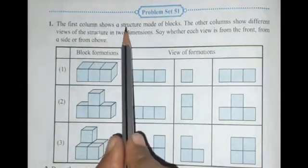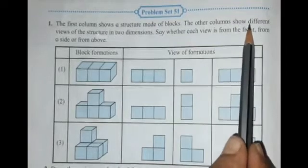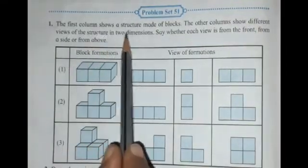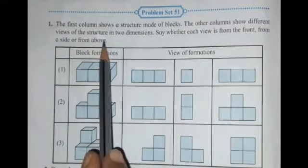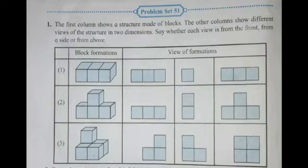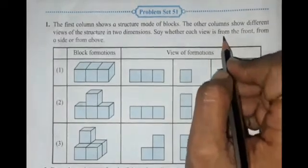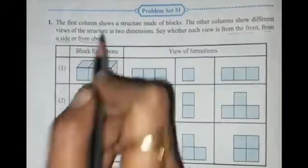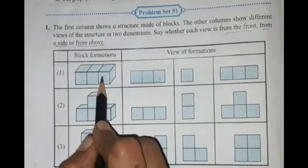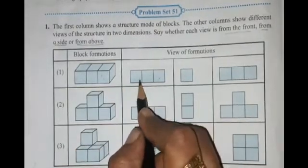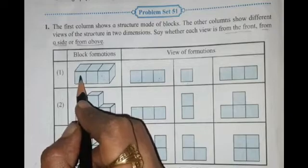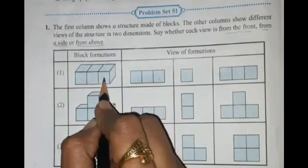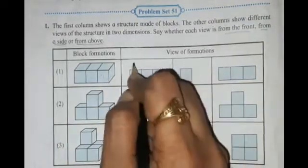Let's see Problems 851, Question number 1. The first column shows a structure made of blocks; the other columns show different views of the structure in two dimensions. We need to identify whether each view is from the front, from a side, or from above. For the first formation, the first view shows 1, 2 and 3 blocks — we can see these 3 blocks from the front, so we write 'from the front.'